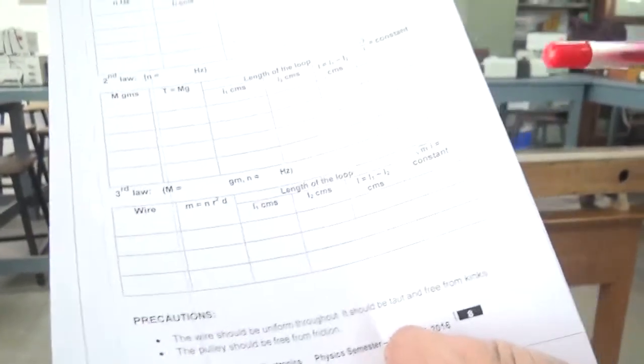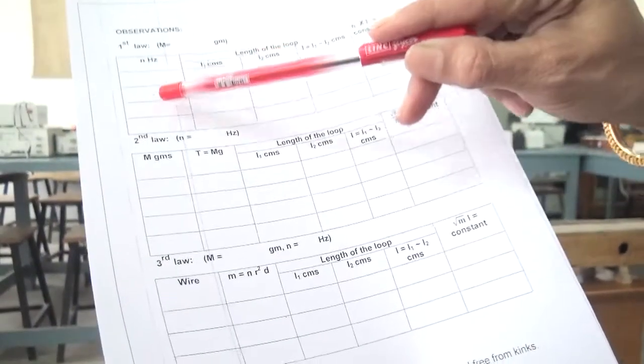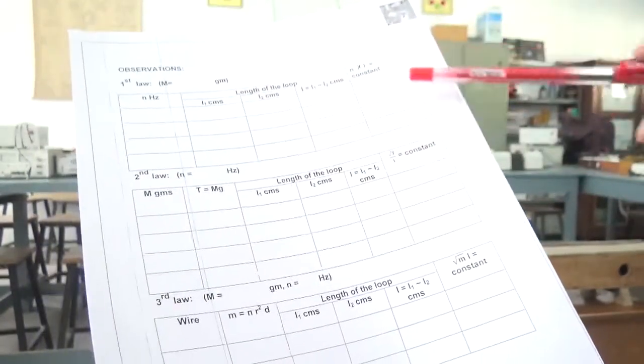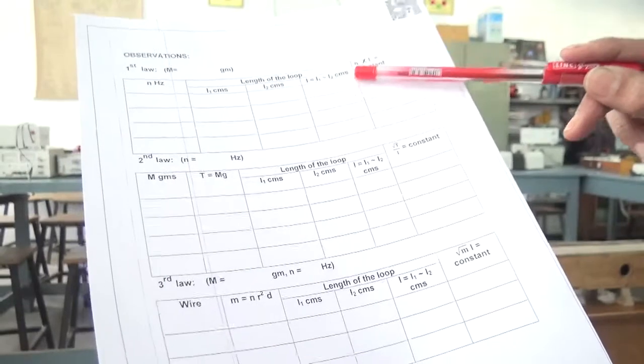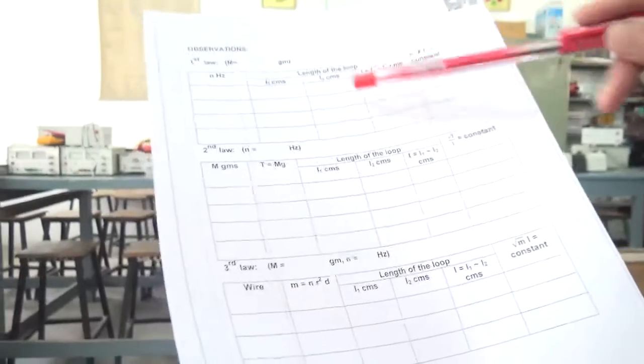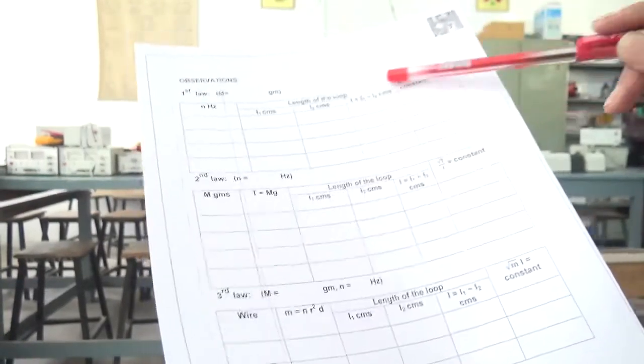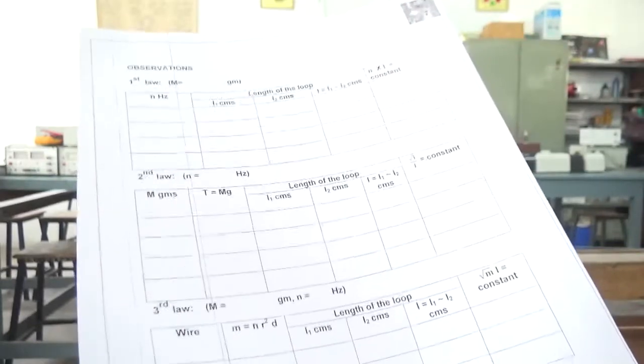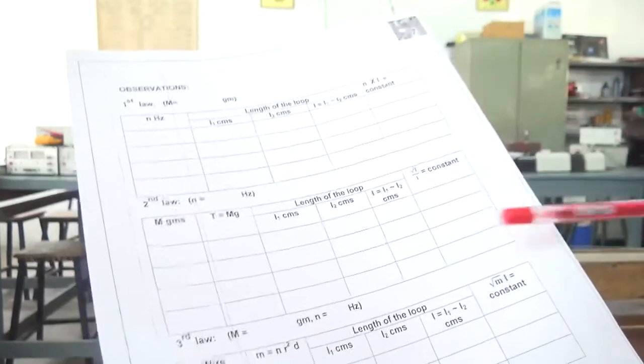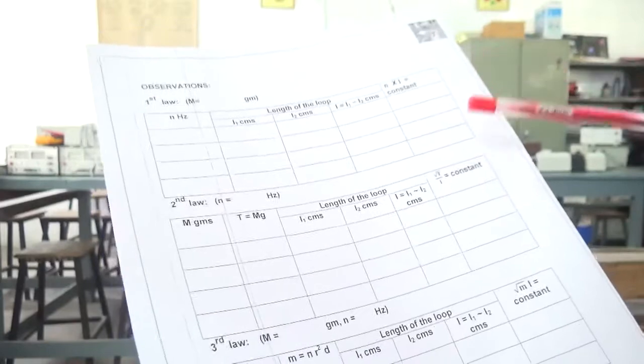You can use this experiment also to find out the frequency of an unknown tuning fork. For that, you can take any one of these formulas. Imagine one of them is not known to you. Repeat this experiment. From this constant, because you already proved that n into L is constant, find out the resonating length as before and equate it to the constant. From this, you find out the frequency of the unknown tuning fork. So this experiment is used to verify the laws of sonometer and also to find the frequency of an unknown tuning fork.